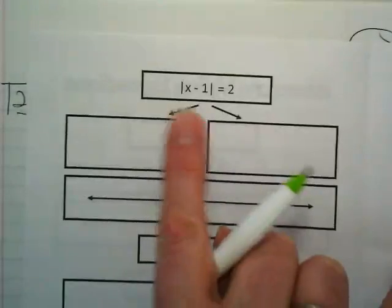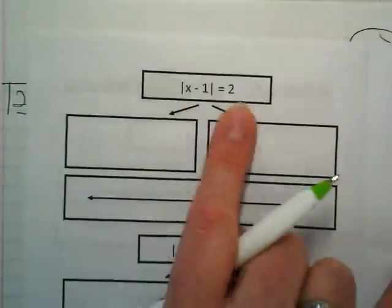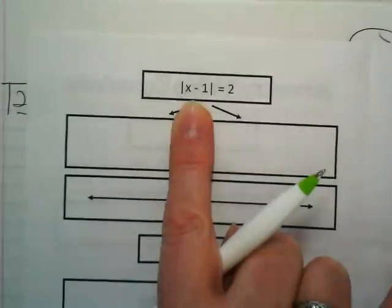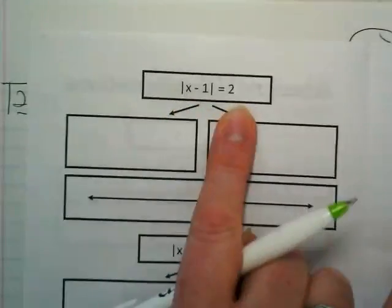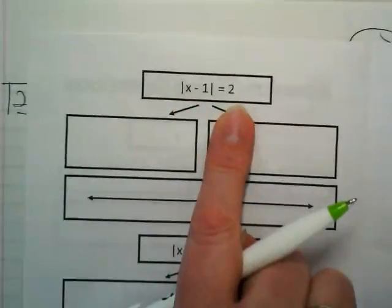It is, because it's on the left side of the equal sign, and the answer that we know this absolute value, whatever is inside of it, is two places away from zero, right?